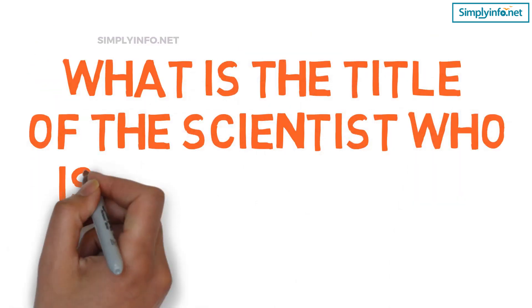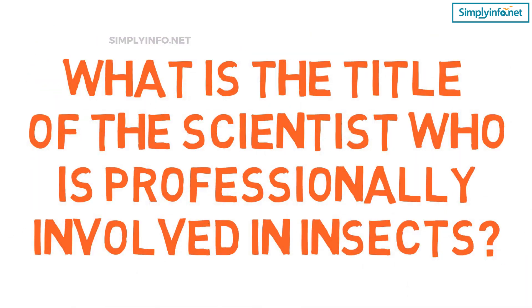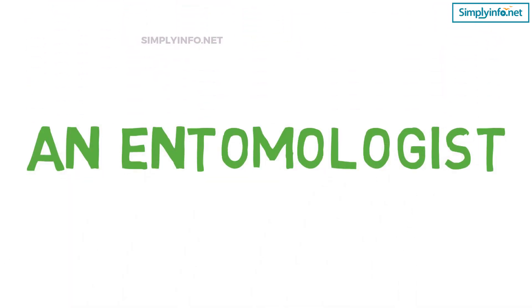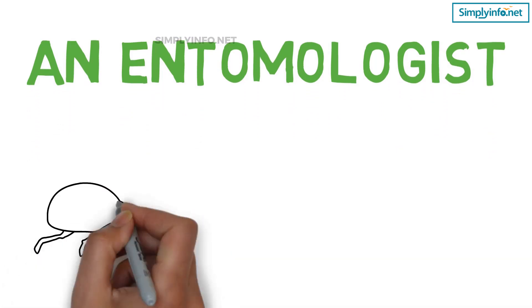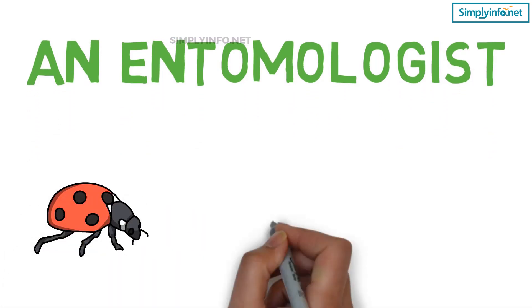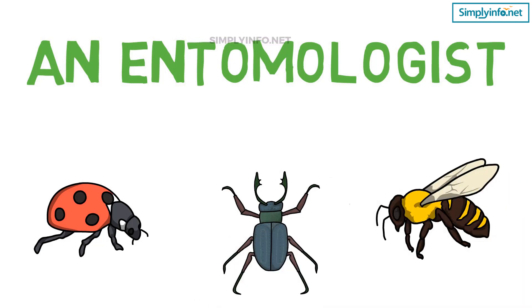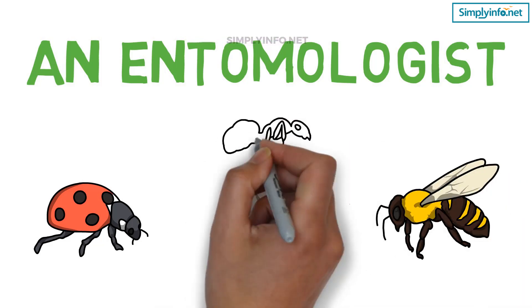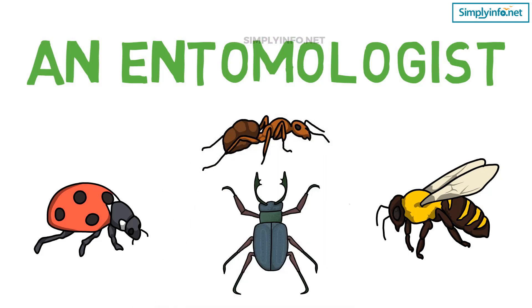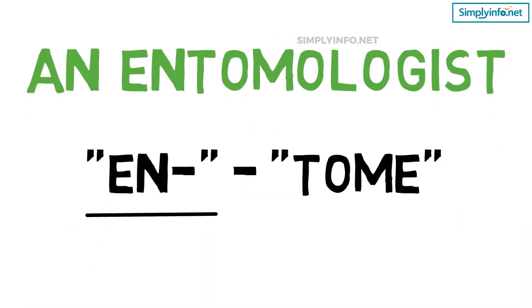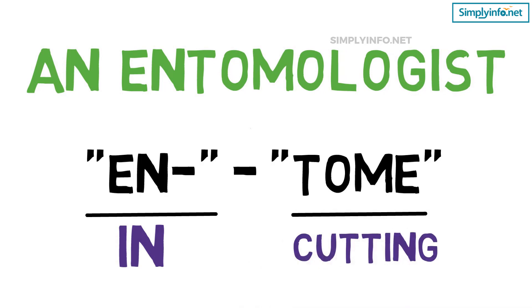What is the title of the scientist who is professionally involved in insects? An entomologist. Flies, bees, beetles, wasps and other insects are segmented creatures with parts like head, thorax and abdomen. Where these parts join, there appears to the imaginative eye a cutting in of the body. Hence the name entomology is derived from the Greek word en and entom, which means a cutting.